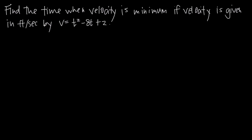In this video, we're doing an applied optimization problem. We've been asked to find the time when velocity is minimum, if velocity is given in feet per second by this function: v is equal to t squared minus 8t plus 2.